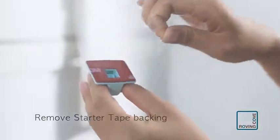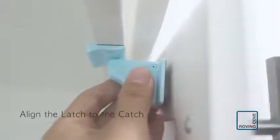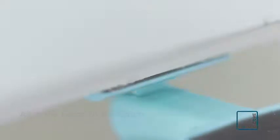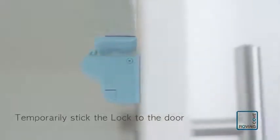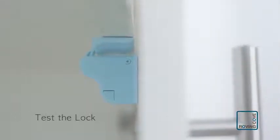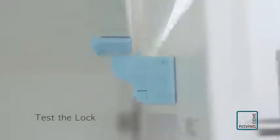Remove the lock starter tape backing and align the top of the latch to the top of the catch. Temporarily stick the lock to the door. Test that the door is locked and can be unlocked with the ring key.